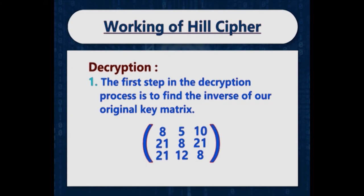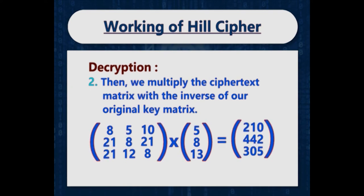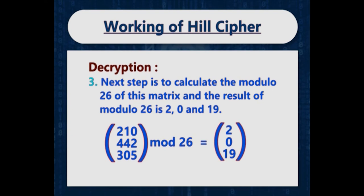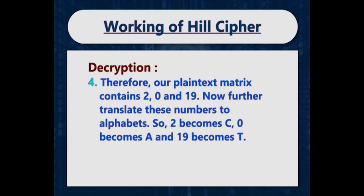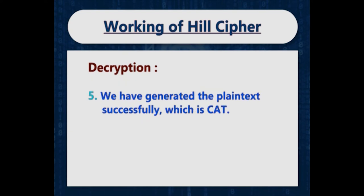Next is how to perform decryption using hill cipher. The first step is to find the inverse of the original key matrix. The inverse key matrix contains 8, 5, 10 in the first row, and 21, 8, 21 and 21, 12, 8 in the second and third rows respectively. We multiply the ciphertext matrix with this inverse key matrix and get 210, 42, and 305. Computing modulo 26 gives 2, 0, and 19, which translate to C, A, and T — successfully recovering the original plaintext CAT.